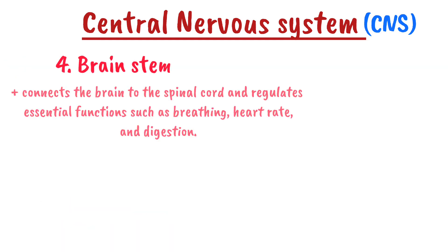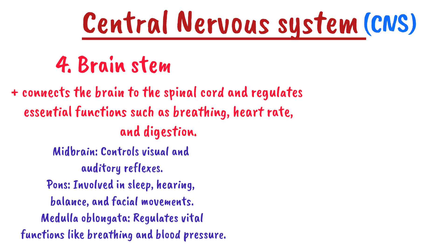Number four is the brain stem. The brain stem connects the brain to the spinal cord and regulates essential functions such as breathing, heart rate, and digestion. It includes the midbrain, which controls visual and auditory reflexes; the pons, which is involved in sleep, hearing, balance, and facial movements; and the medulla oblongata, which regulates vital functions like breathing and blood pressure. Note: the medulla oblongata is a common exam answer for the part of the brain that controls blood pressure.